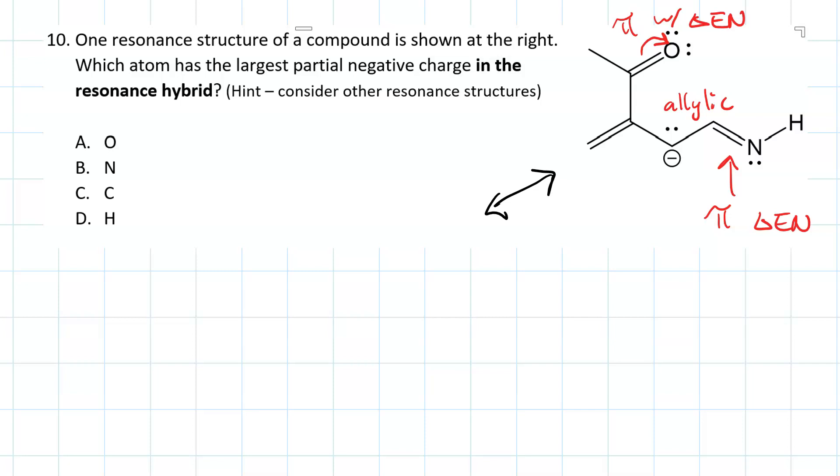So, if we change that pi bond into a lone pair, we end up with an oxyanion and a carbocation in addition to our carbanion. This is definitely less stable because it has a sextet.